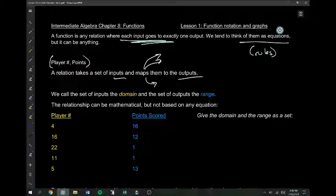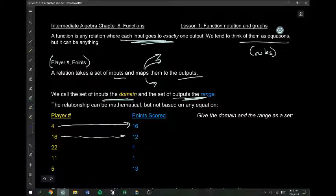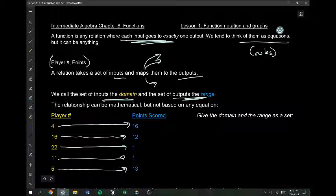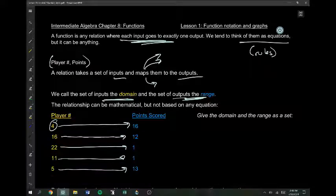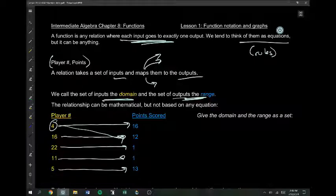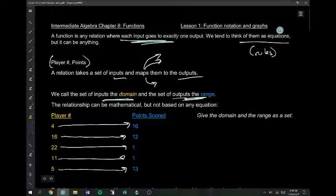So, inputs and outputs form the domain and the range. The set of inputs is called the domain, the set of outputs is called the range. Let's say that player 4 scored 16 points, player 16 scored 12 points, player 2 scored 1, player 11 scored 1, and player 5 scored 13. This is a function, and sports have to have functions because player 4 can't have scored 16 points in a game and 12, right? Like both those aren't possible if we're going to count his total points scored. So, each input can only go to one output, and that makes it a function.